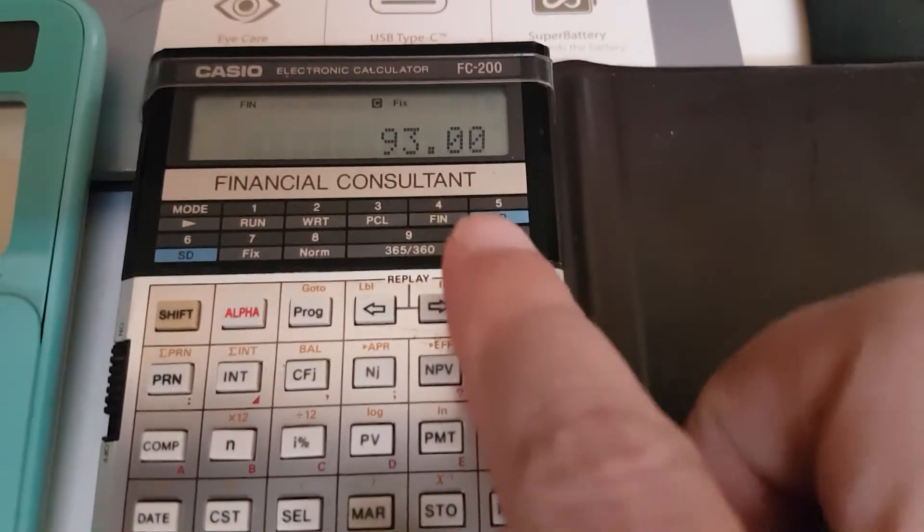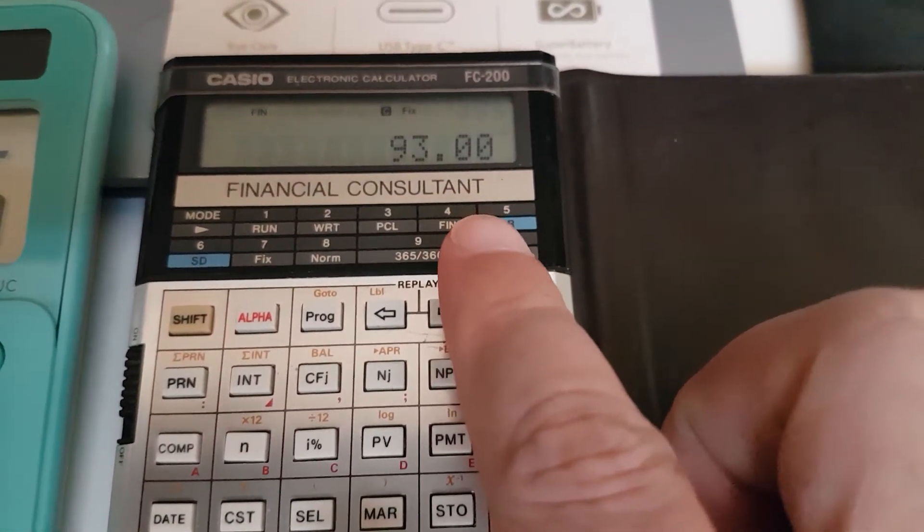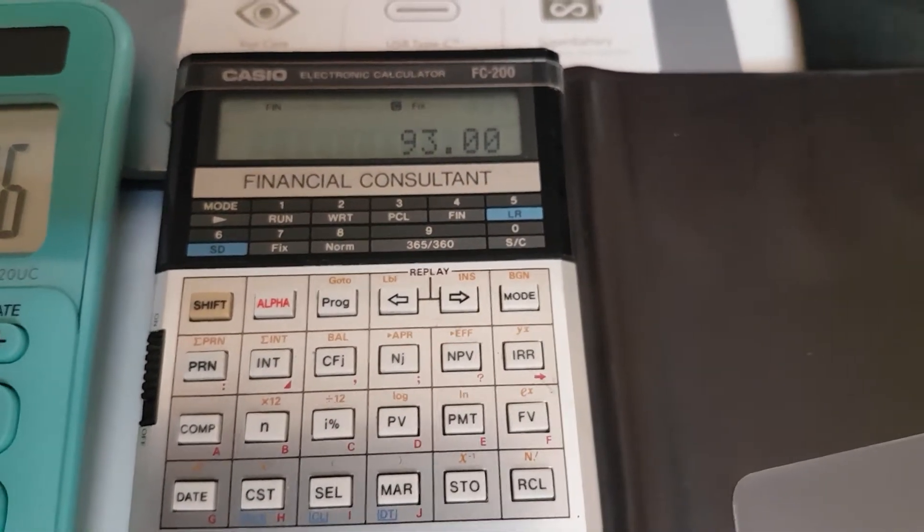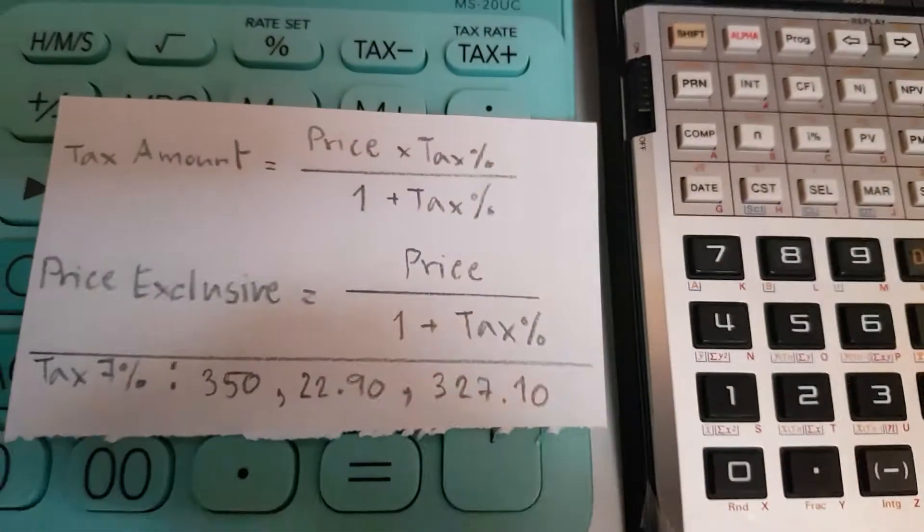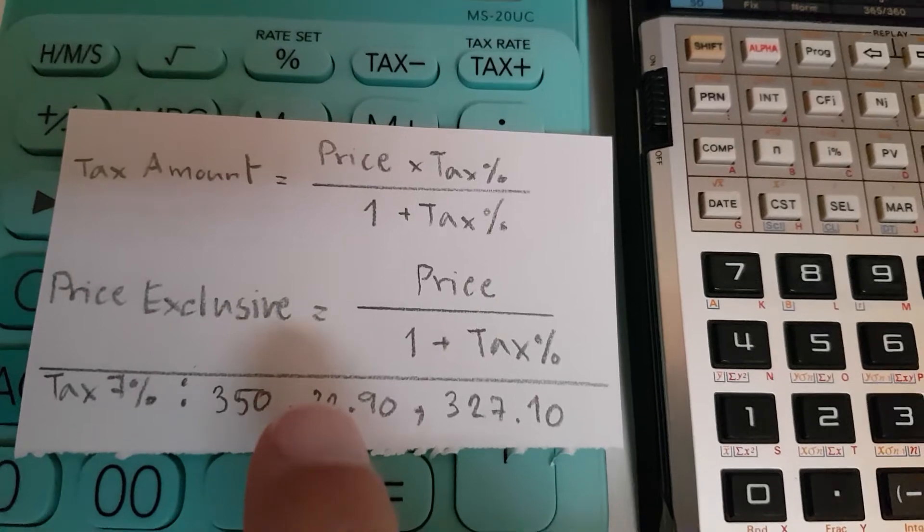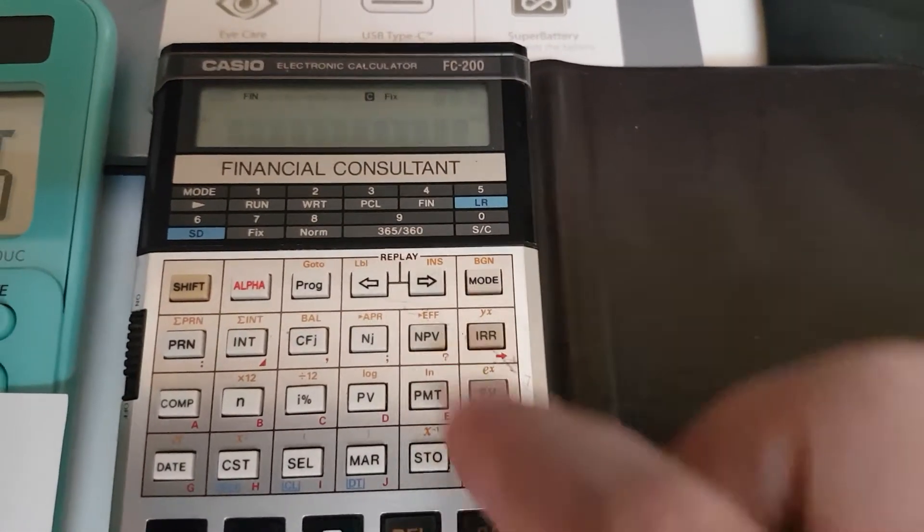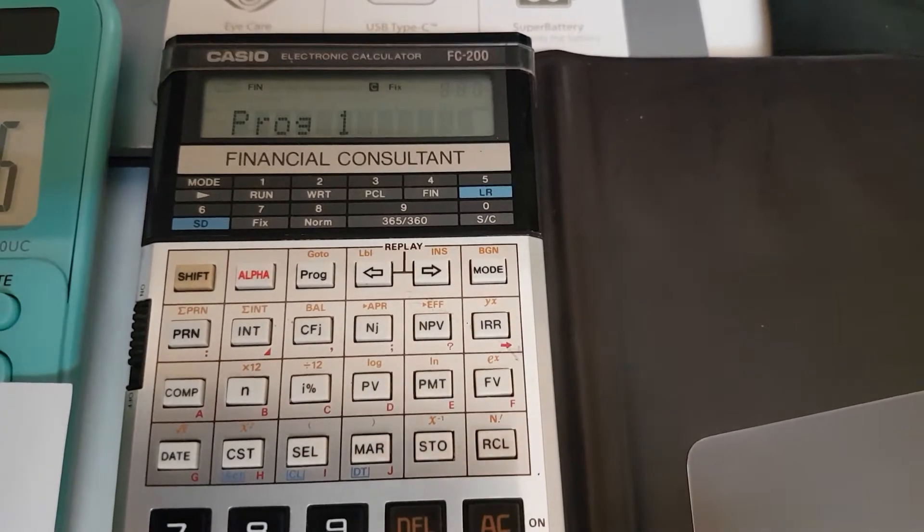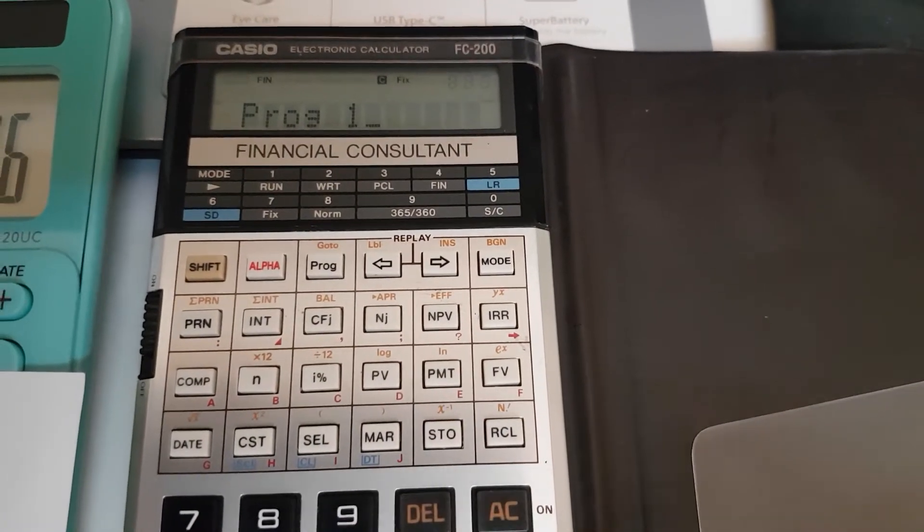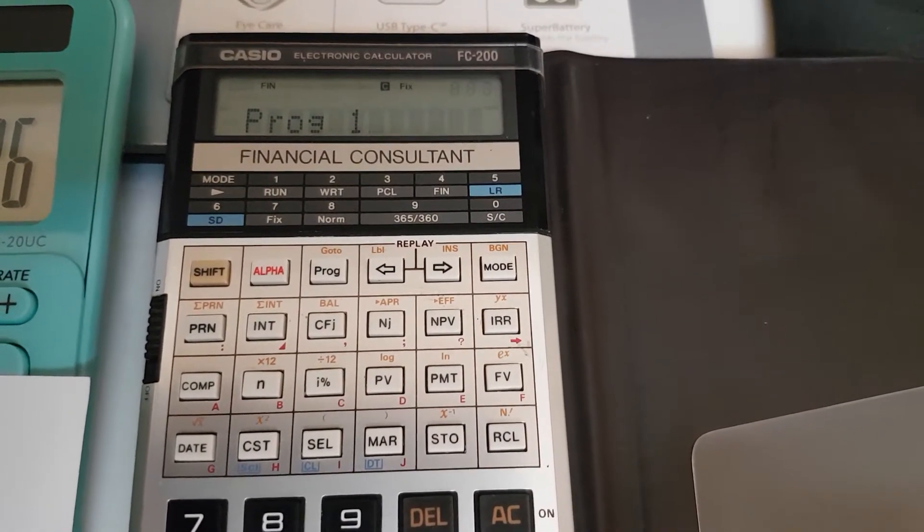It's not exactly 93, so I have programmed this on this calculator using this formula. So I will go ahead and go to program number one where I put the formula to calculate tax minus.